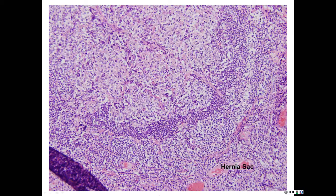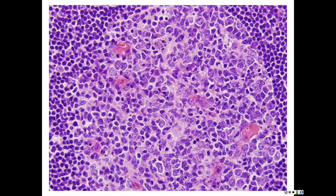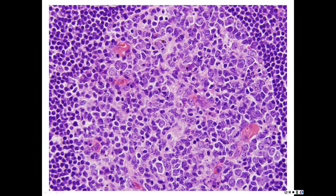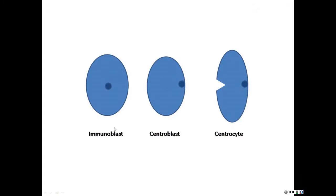Here we are in a hernia sac, and we're actually making out some marginal zone there. Now we're in the germinal center. Germinal center lymphocytes tend to be larger; they have visible nucleoli; they're usually cleaved, which means they're not just round. A blast is round; a cyte is cleaved.